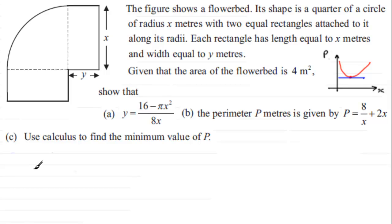We need to differentiate P with respect to x and I notice that the term 8 over x isn't in a suitable form. So you write it as 8x to the power minus 1. Remember x to the power minus 1 is 1 over x. And then we've got the plus 2x. So we should be able to now differentiate this with respect to x.